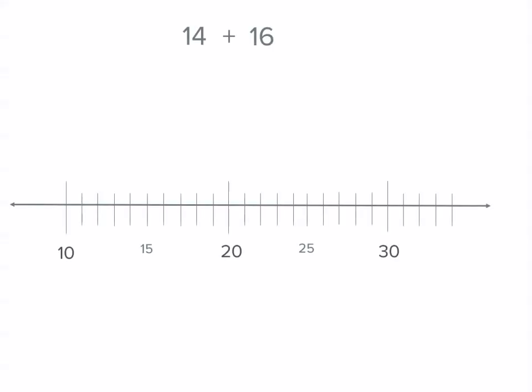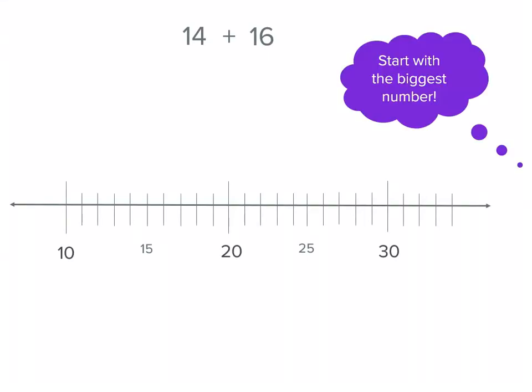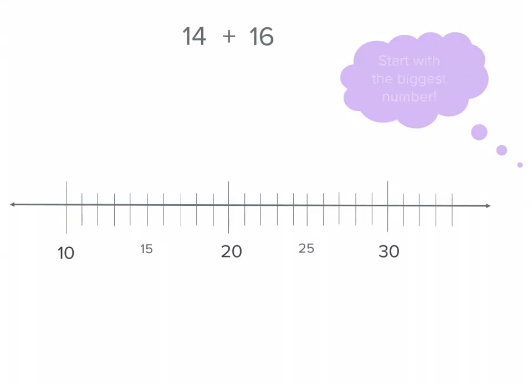Let's try fourteen plus sixteen. One of the tricks is to always start with the biggest number, because then you don't have to count on as many on your number line. If we start with sixteen instead of fourteen, we only have to count on by fourteen, which saves us time.